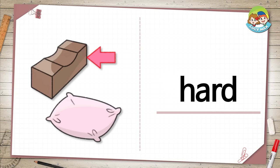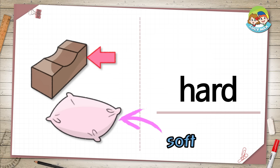Hard. In the picture, an arrow is pointing to a brick. The brick is hard. The pillow is soft. What other thing is hard?